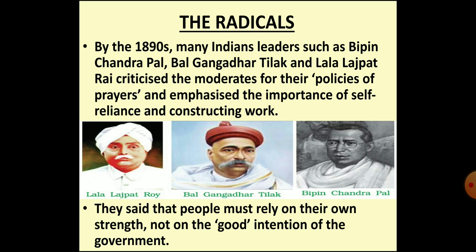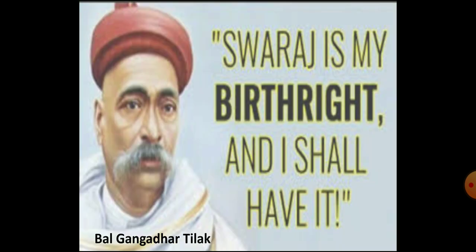This moderate policy of Congress was criticized by several Indians. Some Indian leaders in Bengal, Maharashtra, and Punjab — like Bipin Chandrapal, Bal Gangadhar Tilak, and Lala Lajpat Rai — realized the futility of the moderate policy and started thinking of adopting more revolutionary objectives and methods. Such leaders came to be called the radicals or extremists. These extremist leaders condemned the moderate policies of praying and petitioning the British. They stressed upon the importance of self-reliance and constructive work, believing people should have faith in their own strength. They demanded Swaraj or self-rule. Tilak made a forceful claim by raising the slogan: Swaraj is my birthright and I shall have it.